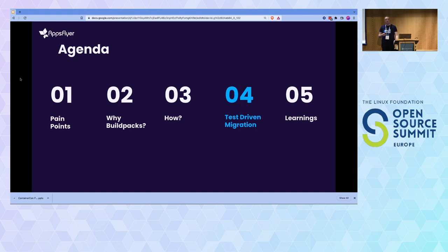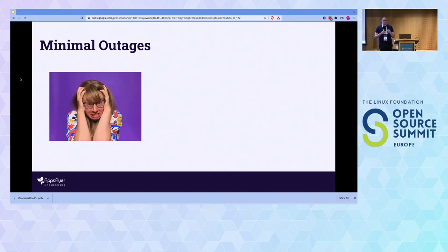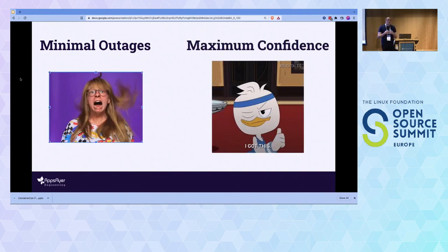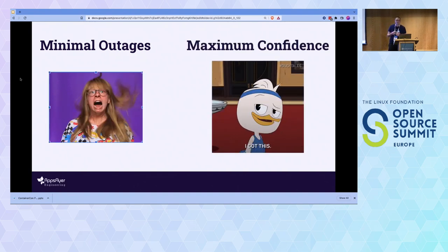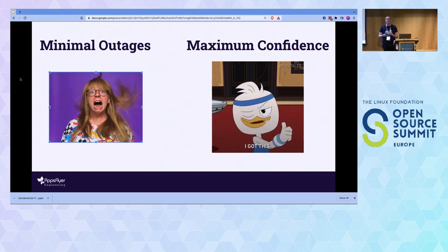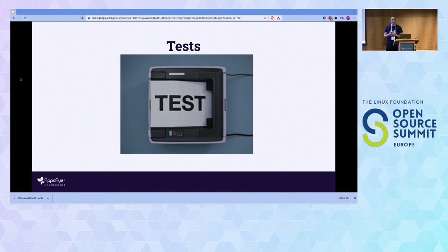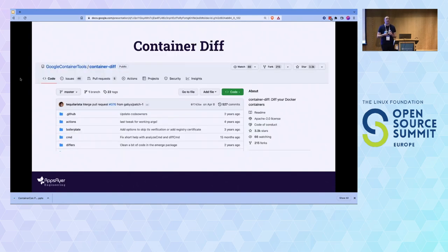Now I want to talk about our migration process. No one wants to break production — that's everybody's horror story. We wanted minimal outages while maximizing developer confidence. As engineers, we know there's really only one way to effectively do that: using tests. We needed to test that the images we created would match — with a very small degree of difference — the images running in production.